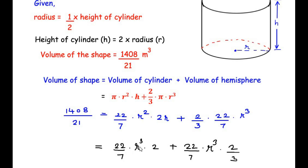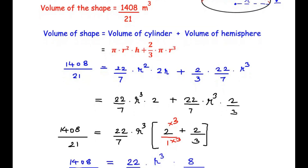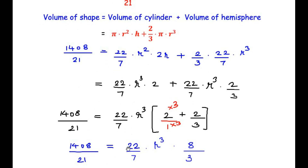Since (22/7) × r³ is a common factor in both terms, we take it out: 1408/21 = (22/7) × r³ × (2 + 2/3). Taking the common LCM inside the bracket gives (6 + 2)/3 = 8/3. So the equation becomes 1408/21 = (22/7) × r³ × (8/3).